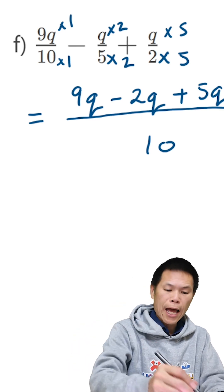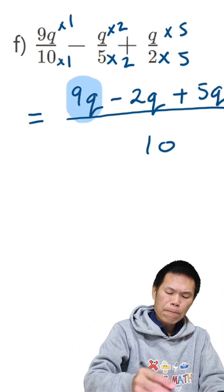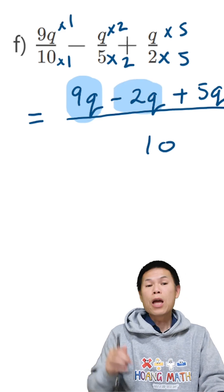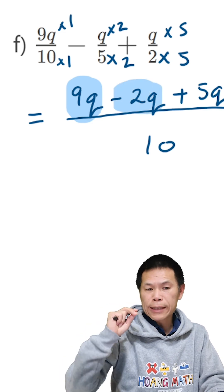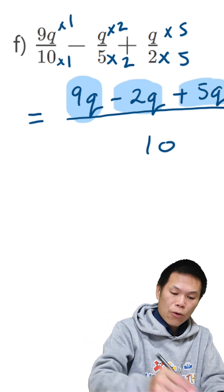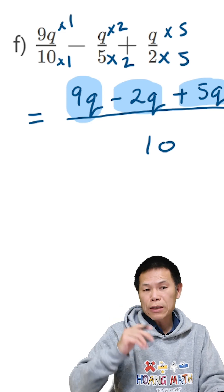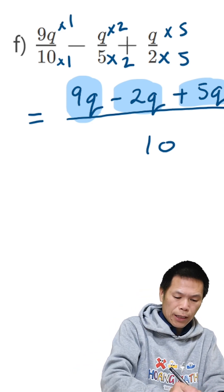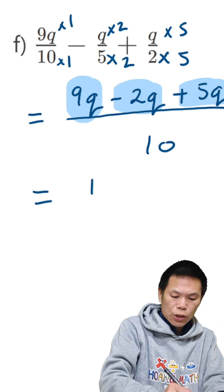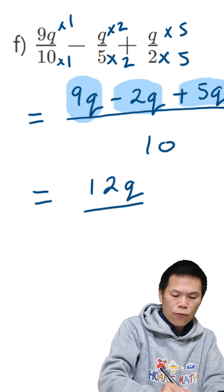Now I just collect the like terms. So we have 9q here. We minus 2q. 9 minus 2 is 7. And then 7, we plus 5. So 7 plus 5 gives me 12. So the answer is equal to 12q over 10.